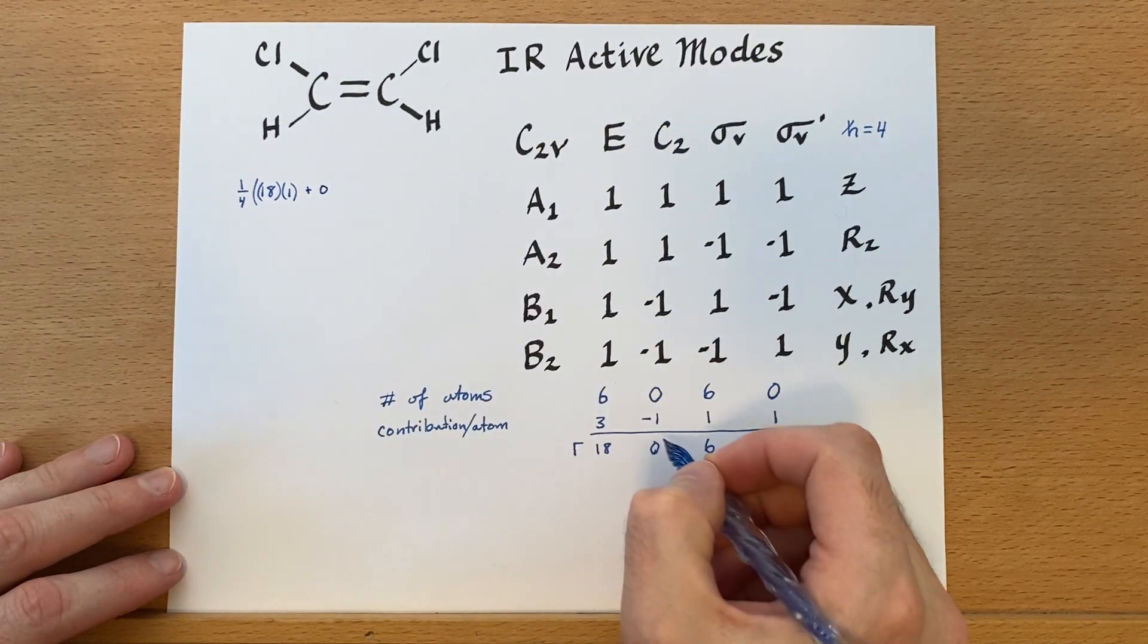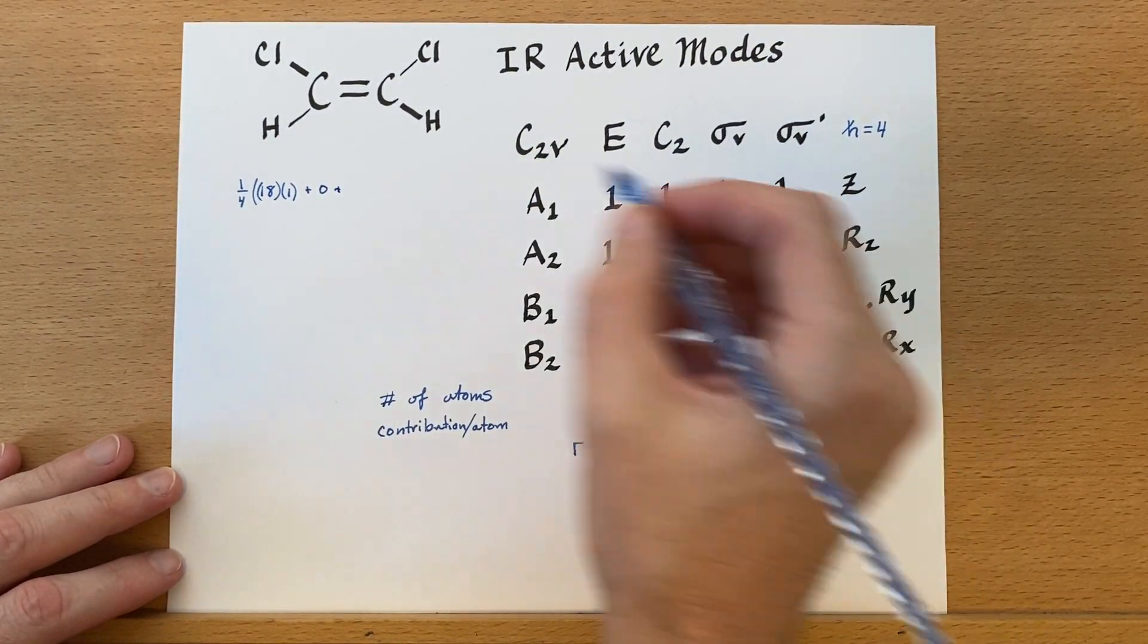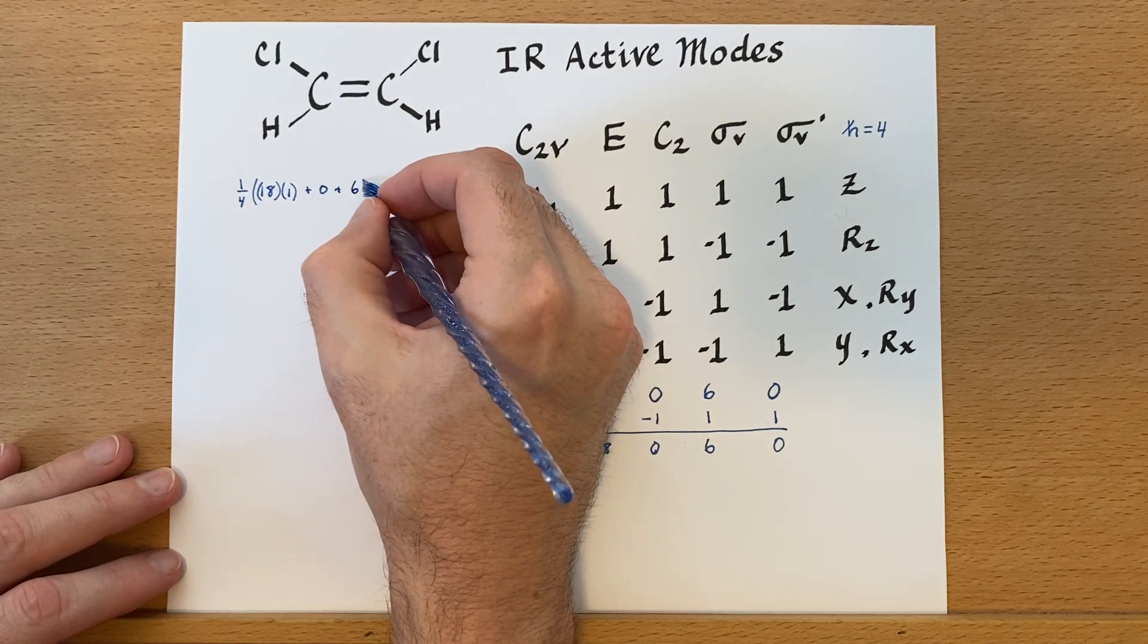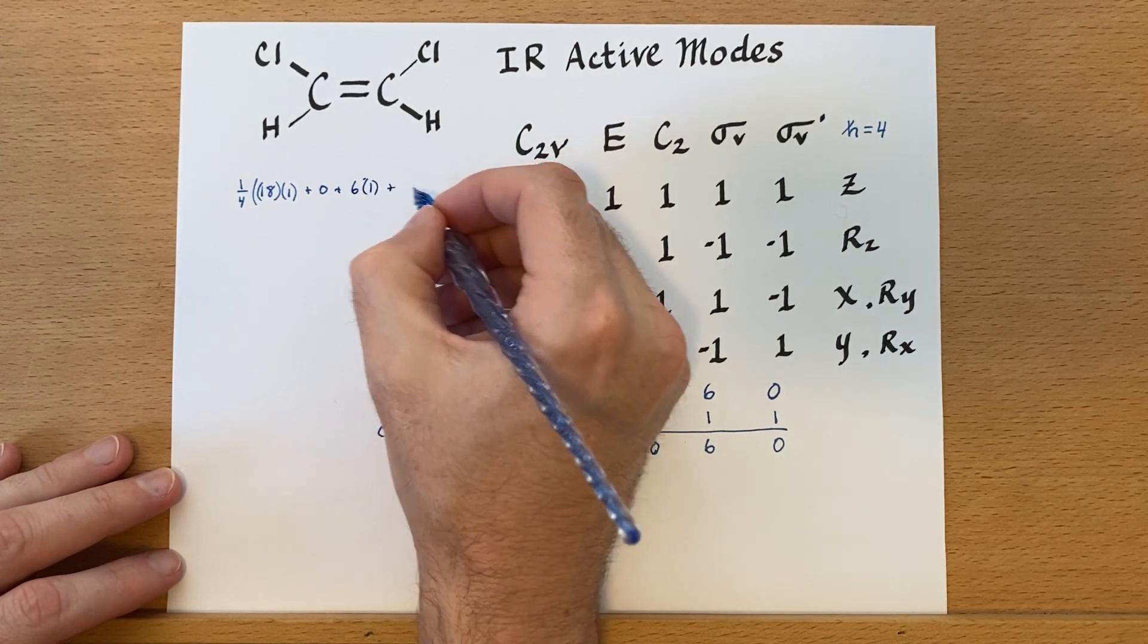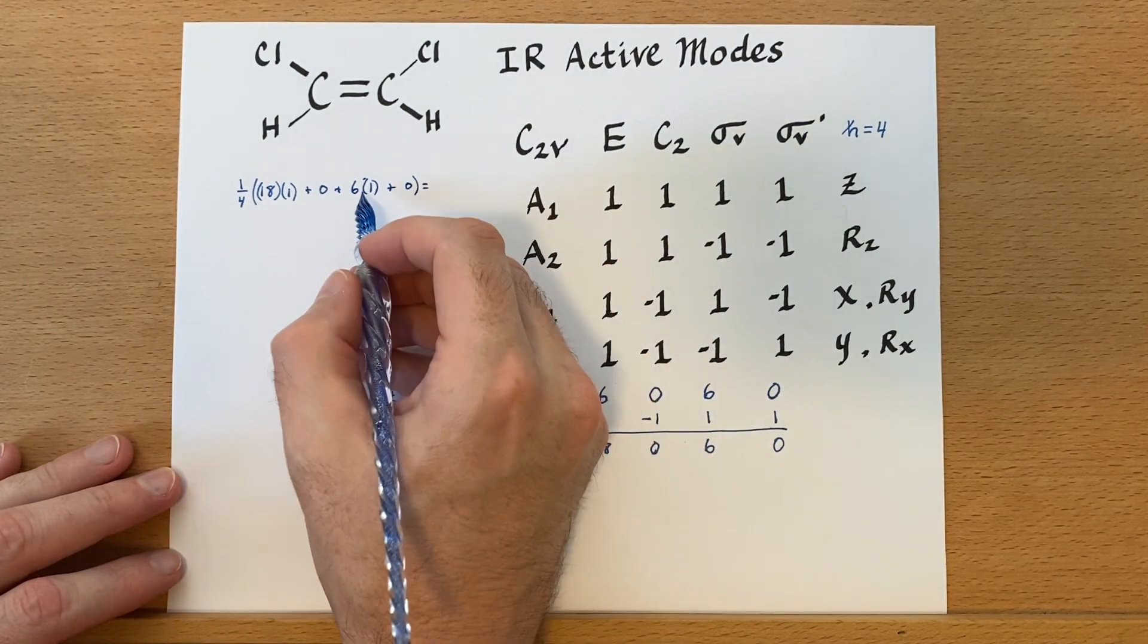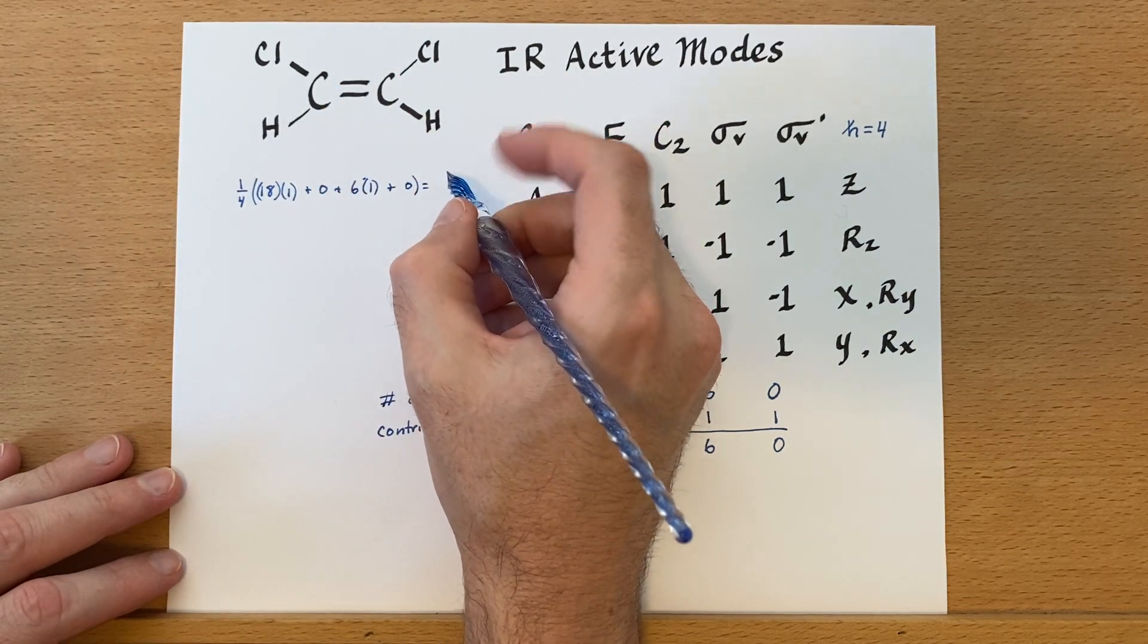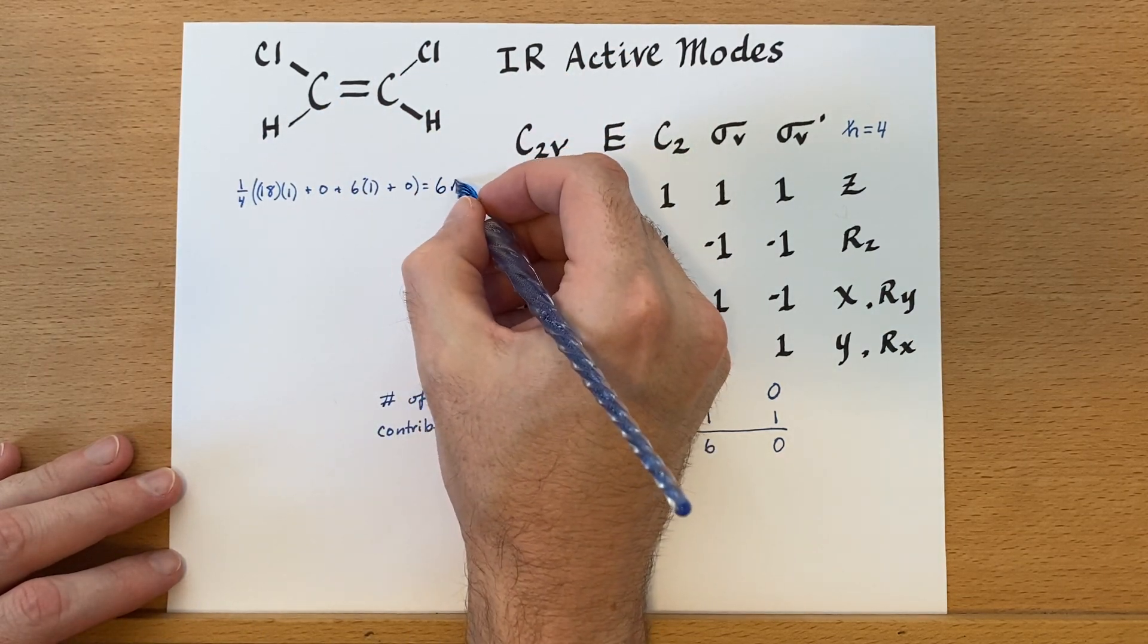Plus zero times other stuff is going to be zero. Six times one. Plus zero. And this is going to be six, right? Six plus 18 is 24. Divide by four is six A1s.